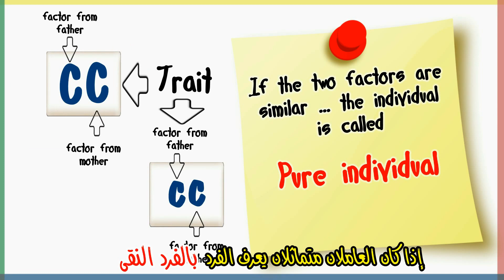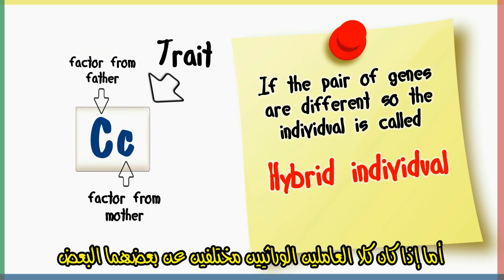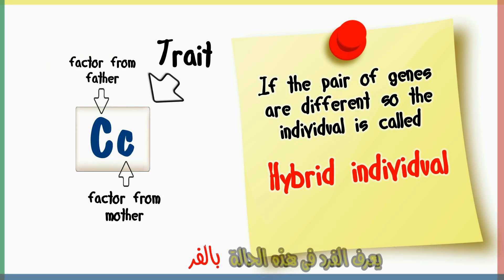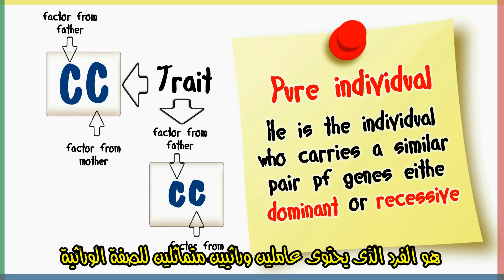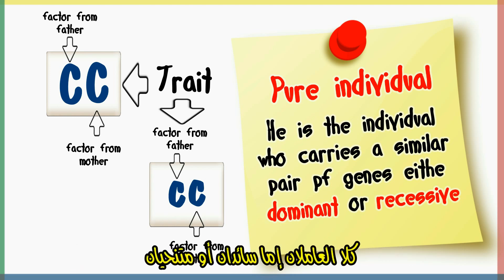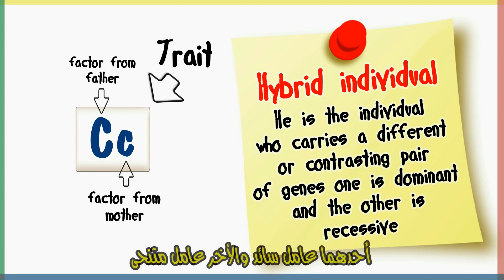If the two factors are similar, the individual is called a pure individual. While if the pair of genes or factors are different, the individual is called a hybrid individual. The pure individual carries a similar pair of genes, either both dominant or both recessive. The hybrid individual carries a different or contrasting pair of genes — one is dominant and the other is recessive.